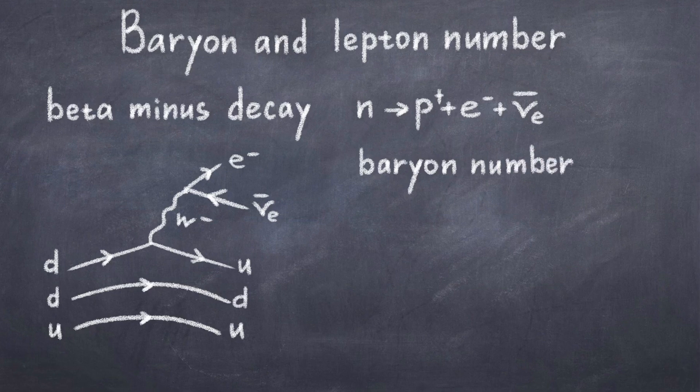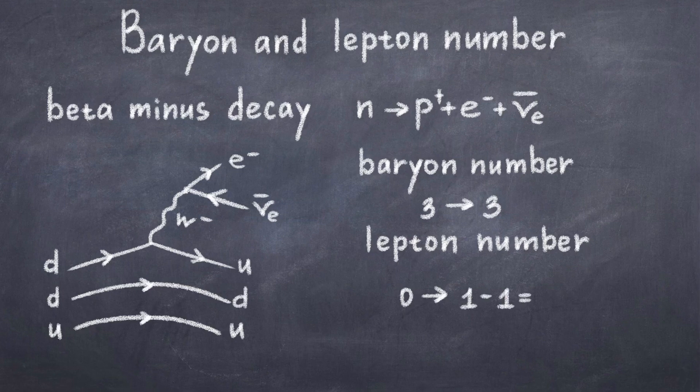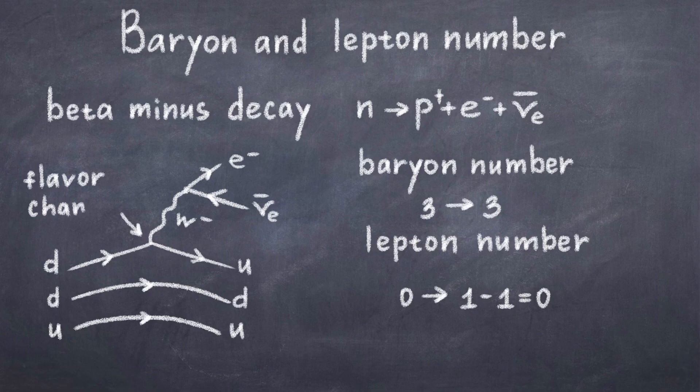In the beginning of the process we only have a neutron, thus we have lepton number zero. But if we only had the electron afterwards, we would have a plus one lepton number, therefore we must have an anti-neutrino to cancel this out. So with the anti-neutrino we get one minus one is equal to zero, and lepton number is conserved. This process is also an example of how flavor is broken by the weak force. The W-boson mediator in this case changes the flavor of the down quark into an up quark.